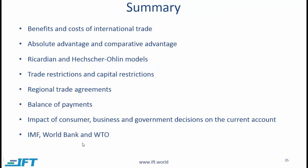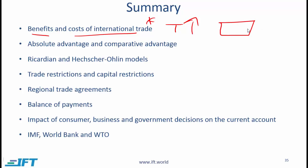Let's summarize what we have learned in this reading. Benefits and costs of international trade — this is important and testable. In general there is a benefit of trading, and that's why over the last few decades the amount of trade has gone up. The benefit of trade doesn't mean that every single entity or stakeholder benefits — overall there is a net benefit. The benefit to a given country can be in the form of exporting goods at a higher price relative to the price received by selling internally, and/or importing goods at a lower price relative to the cost of producing internally.